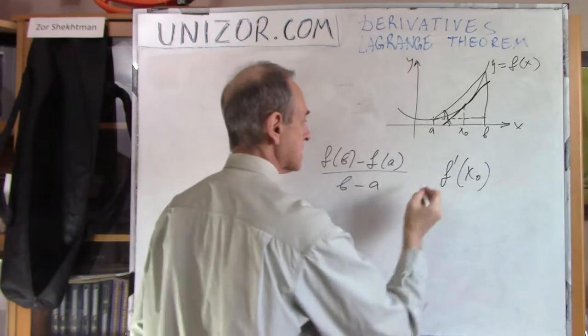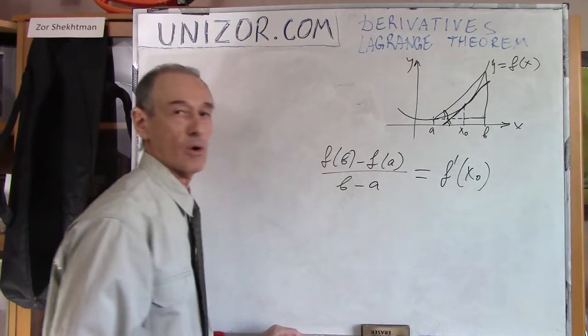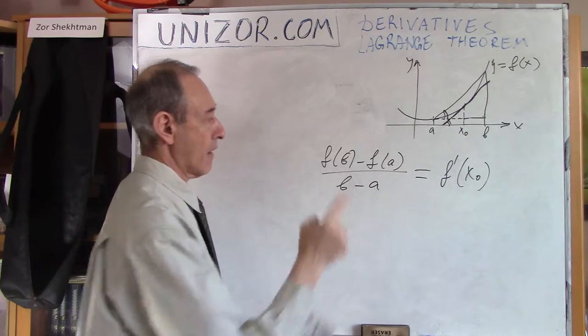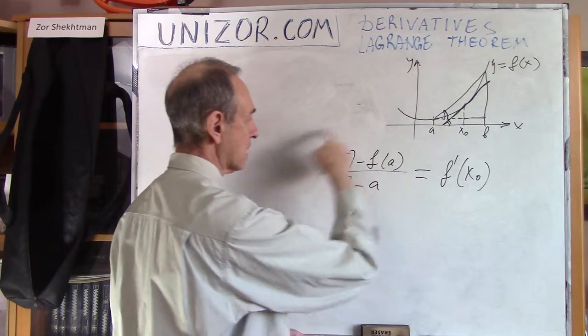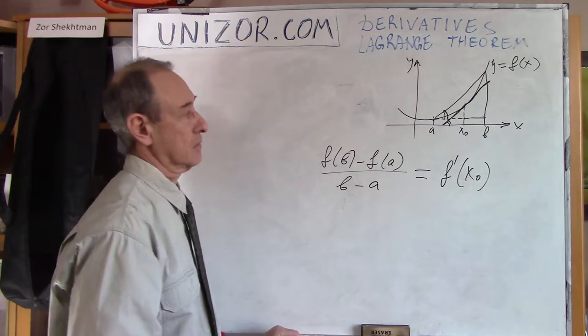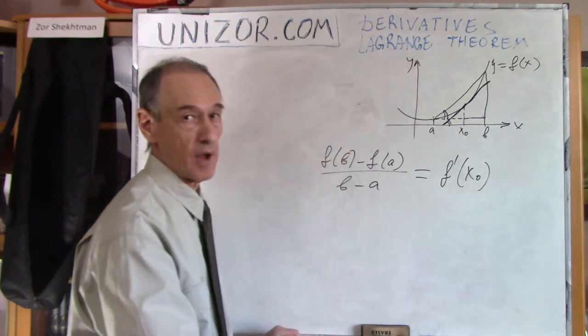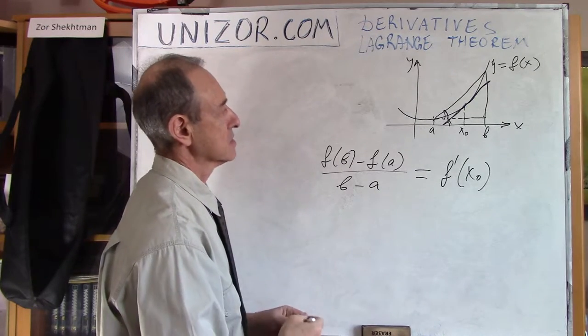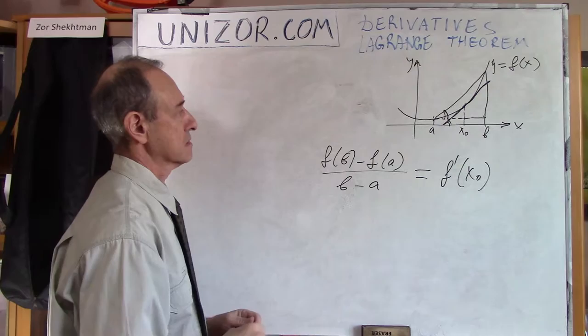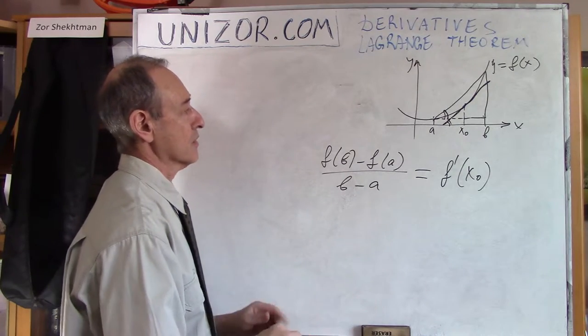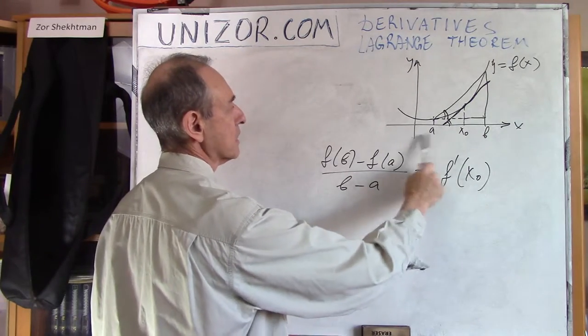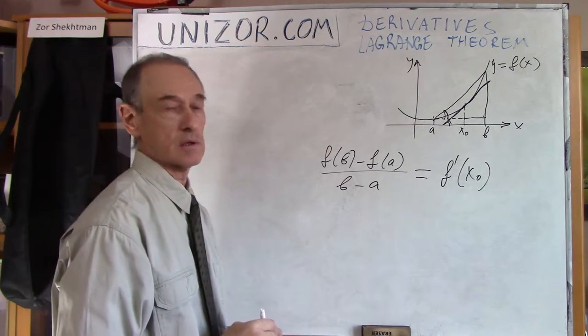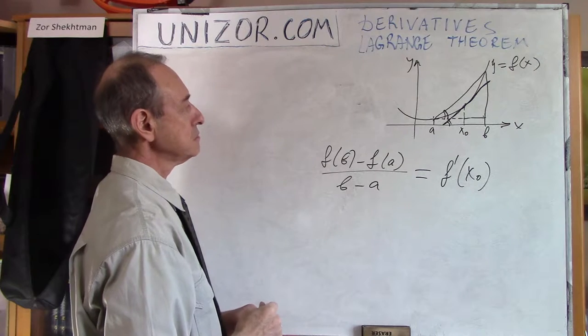The theorem states that there is such a point x0 where the derivative is equal to this ratio for any relatively smooth function, which means it's differentiable, its derivative is continuous, and stuff like this. For a nice and smooth function, there is always x0 between a and b, where this equation is true.